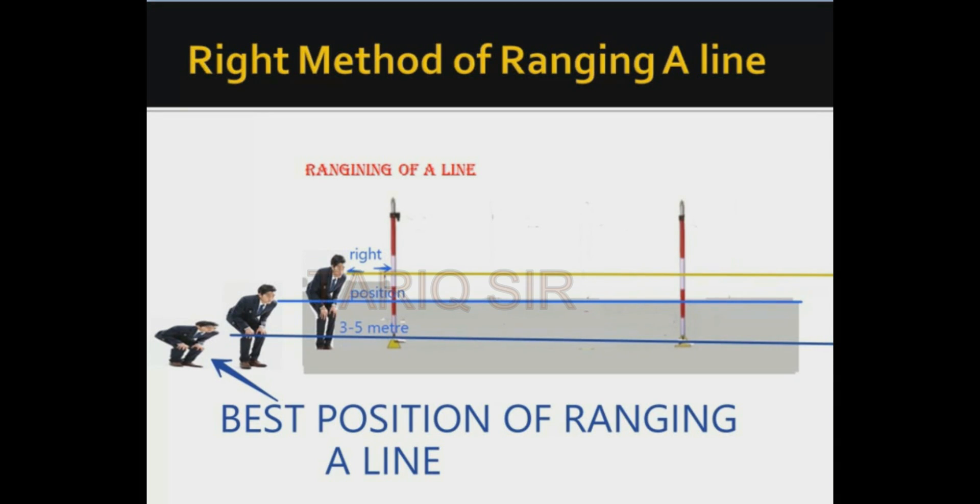Now as you can see in this figure, I have tried to explain in quite detail the procedure of ranging in different positions. When you are at this position, then your ranging line is this. When you change your position and you bend a bit and you move more behind, your position comes up to be this way.